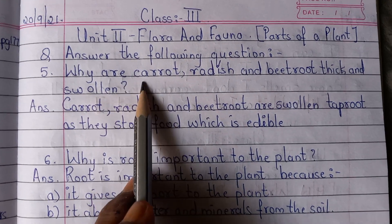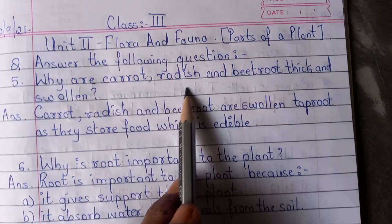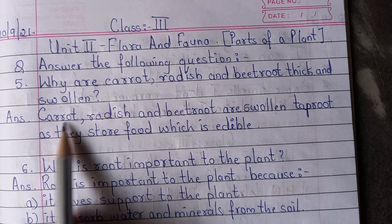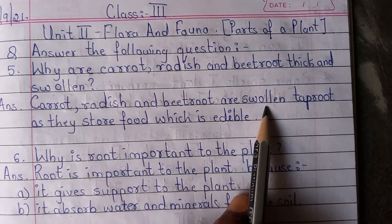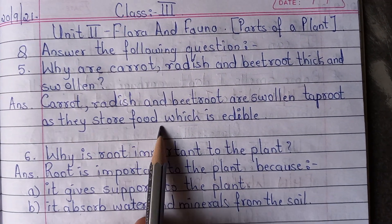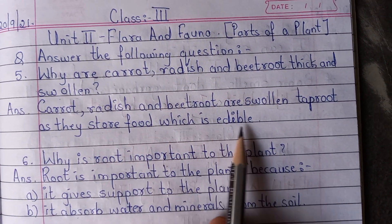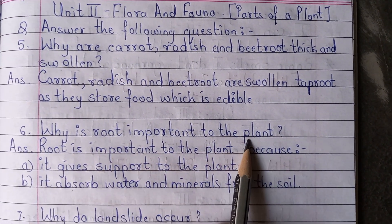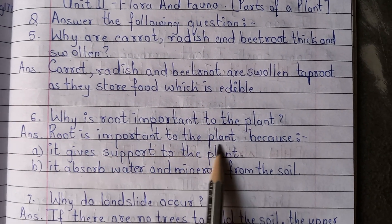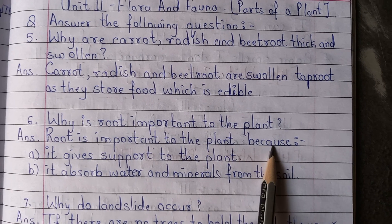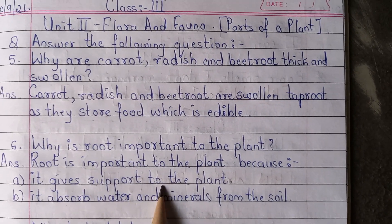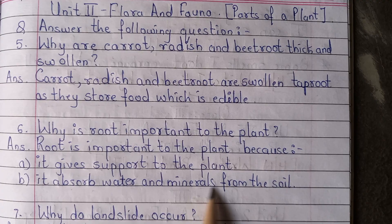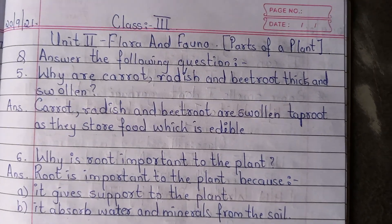Why are carrot, radish, and beetroot thick and solid? Carrot, radish, and beetroot are solid taproots as they store food which is edible. Why is root important to the plant? Root is important because it gives support to the plant and it absorbs water and minerals from the soil.